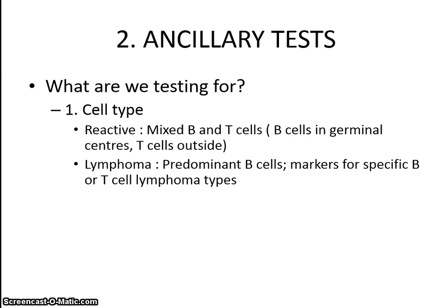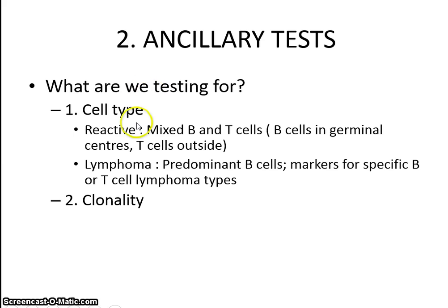Whereas in lymphomas, we would see a predominant B cell type. Most of the lymphomas will be B cell lymphomas, so we would see sheets of B cells, and then we would want to zoom in specifically into the subtype, applying specific markers for B cell or T cell lymphoma subtypes. So the second thing that we are testing for is clonality — firstly cell type, followed by clonality.